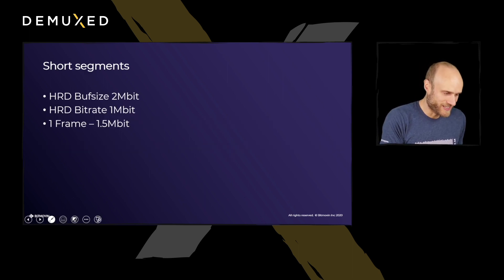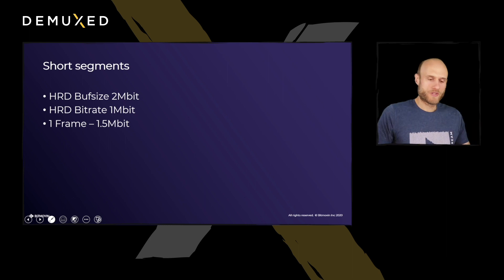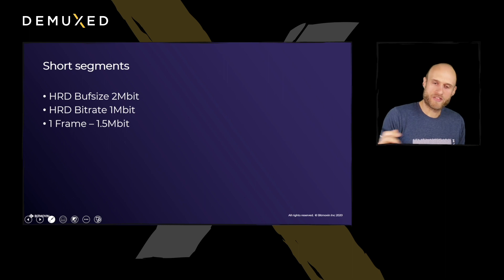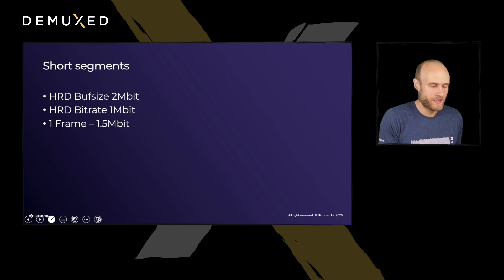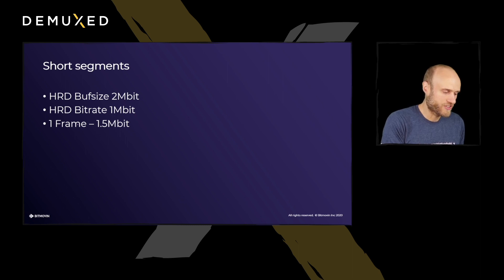Short segments. In short segments, everything is a little bit different, and this is also where bitrate is not really bitrate — or where you have to really look out for what bitrate means. If you have a long encode — one hour — you just divide the file size by the duration and you have a bitrate. But for short segments, this looks a little bit different. Let's say we have a buff size of two megabits, a bitrate of one megabit, and we are just encoding one single frame.